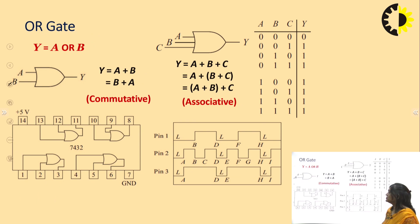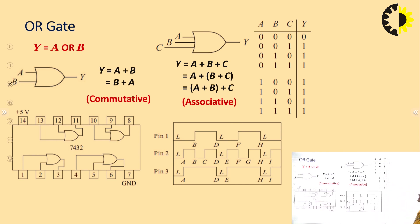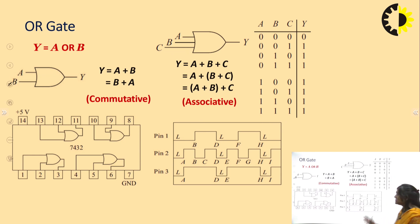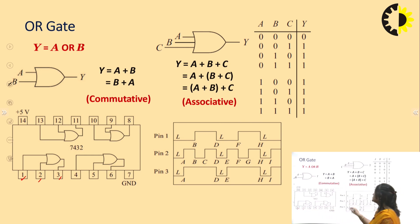For the OR gate, IC 7432 is used and this is a 3-input truth table. We can see where we get the output value 1. The pin diagram shows pin 1 as input, pin 2 as input, and pin 3 as output.